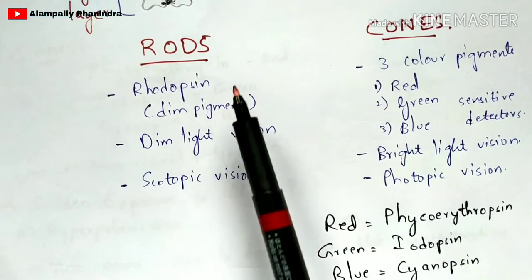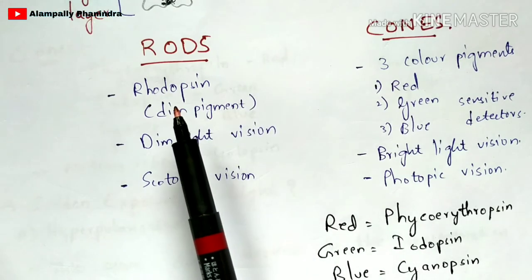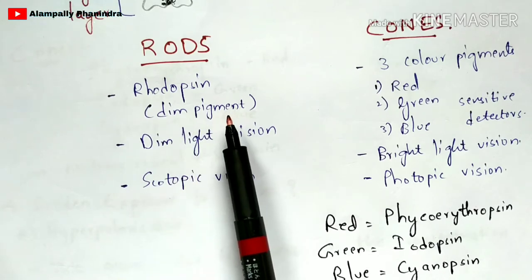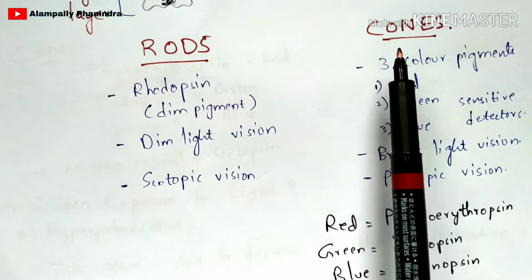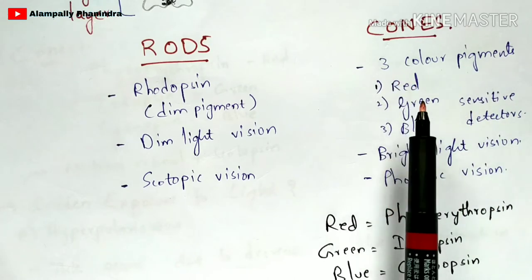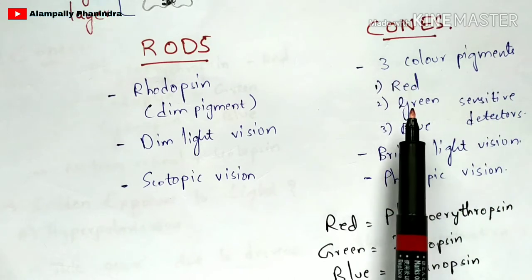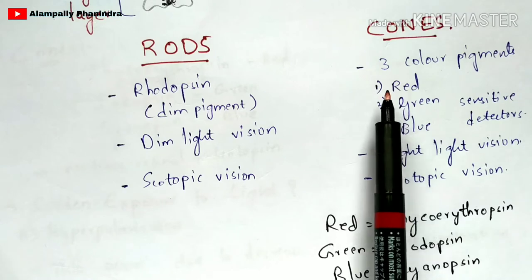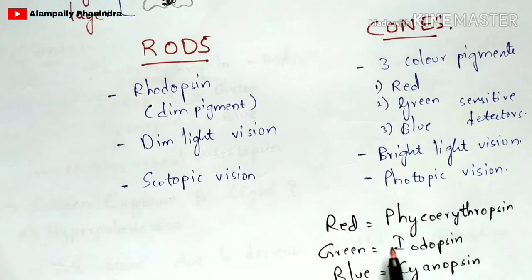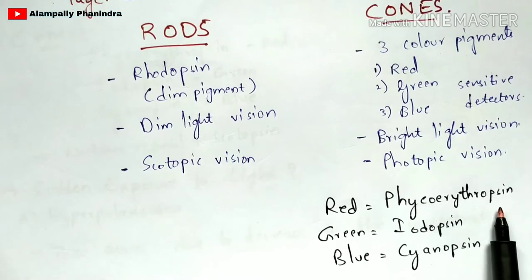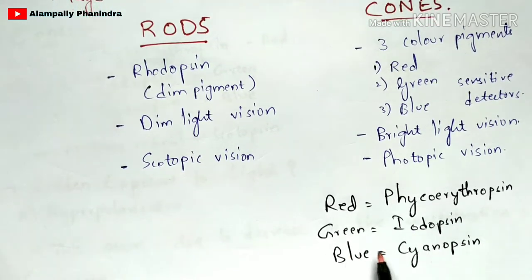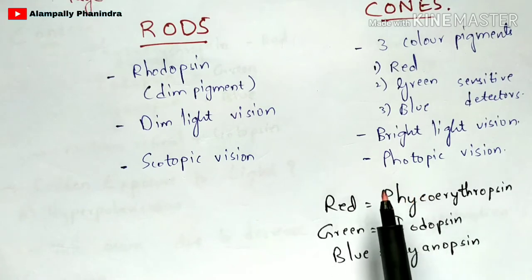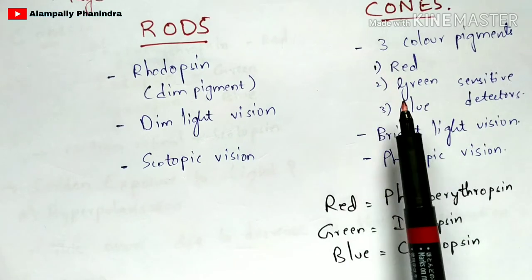Coming to the differences between rods and cones: the major pigment present in rods is rhodopsin, also called the dim pigment. The pigments present in cones are three color pigments — red, green, and blue — called sensitive detectors. The red color pigment is called phycoerythropsin, the green color pigment is called iodopsin, and the blue color pigment is called cyanopsin. All three are named based on their color and are called sensitive detectors.